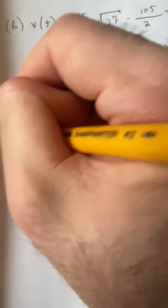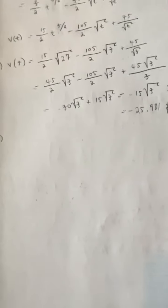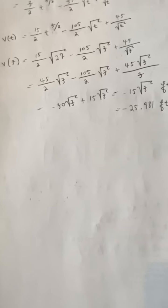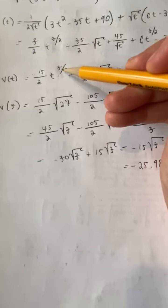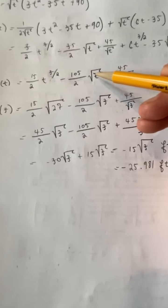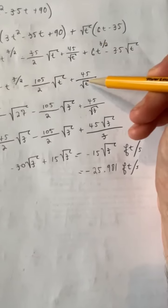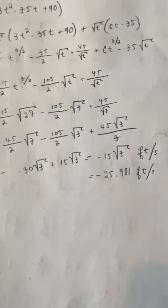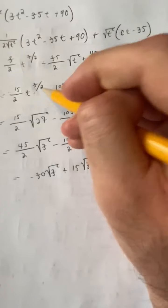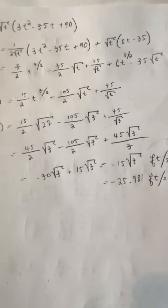Moving on to part c — we want to know when the particle is at rest. You can notice the relationship between the powers on t: we have t to the 3-halves, then t to the 1-half, then t to the negative 1-half — the powers decrease by 1 each time. This relationship is the same as in a quadratic, so you could substitute a variable and turn this into a quadratic solved by the quadratic formula.